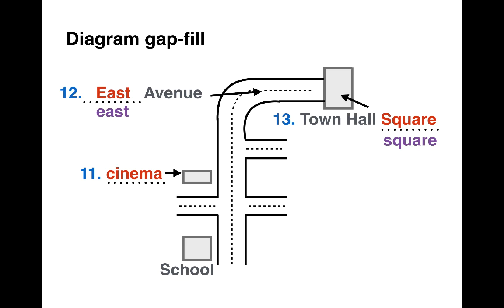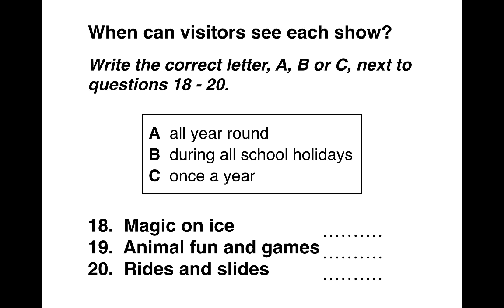Let's move on to another exercise from Section 2 — this time a matching exercise. It says: when can visitors see each show? Write the correct letter A, B, or C next to questions 18 to 20. A, B and C — you've got three choices: all year round, during all school holidays, or once a year. And then questions 18 to 20 are the names of three shows. These will go in order again: 18, 19, 20. You'll hear the three shows in the correct order. I'm going to read it now, and you listen and put the correct letter in the spaces next to the questions.